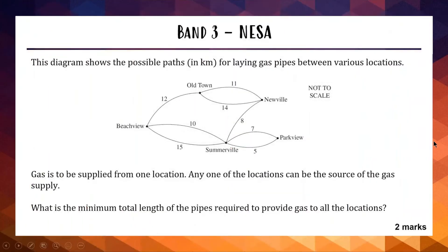On to the next one, the band 3 question from the NESA sample questions. The diagram shows the possible paths in kilometers for laying gas pipes between various locations. Gas is to be supplied from one location. What is the minimum total length of the pipes required to provide gas to all locations? For two marks, we are being asked to link all our locations in the shortest way possible. This is called a minimum spanning tree.